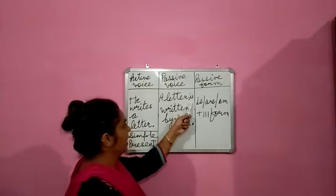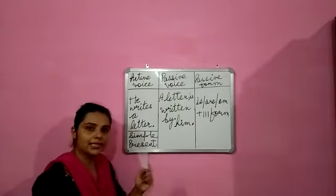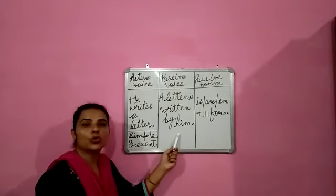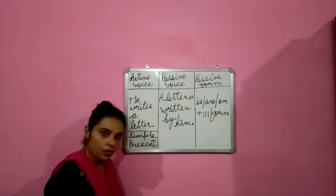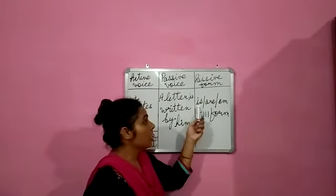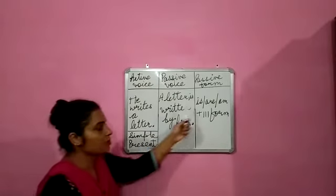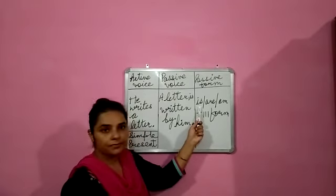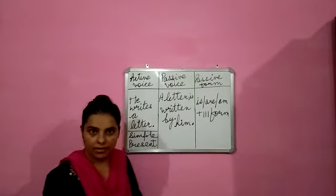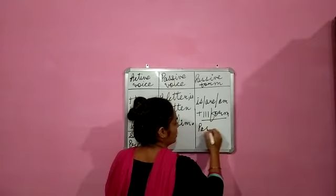The passive form is: 'A letter is written.' Write, wrote, written — the third form of 'write' is 'written.' So: 'A letter is written by him.' He changes into him, she changes into her. The rule for simple present tense is: is / am / are plus the third form, that is, past participle.